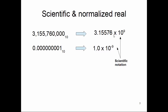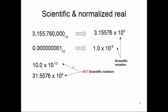These are scientific notations. But note that writing 10 × 10^−10 or 31.5576 × 10^8 represents the same values — however, these are not scientific notation. The first criterion of scientific notation is that there is only one digit to the left of the decimal point. If the left-hand side of the decimal point contains more than one digit, it is no longer a scientific notation.